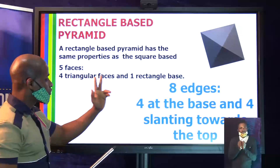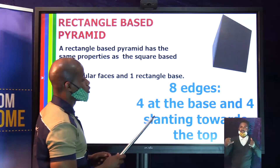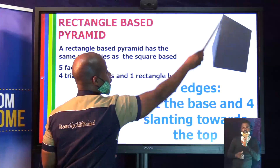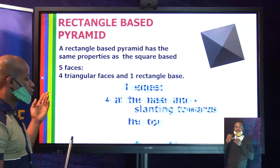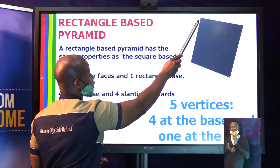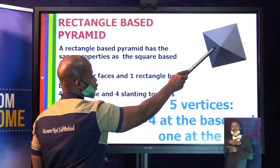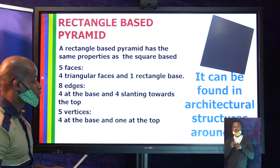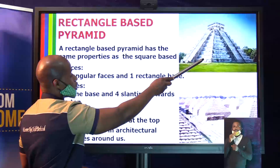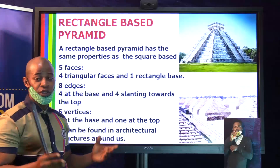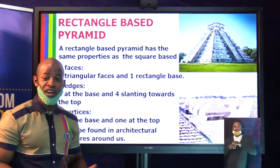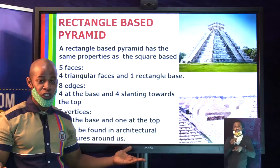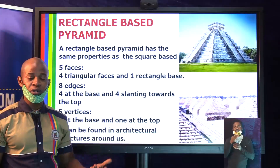It also has five vertices: four at the base and one on top. This shape appears in architectural structures around us. The Mayan temple is an ancient temple in the shape of a rectangle-based pyramid. The famous granite pyramids of Kano, where the Kano people used to pile up their granites in the form of rectangle-shaped pyramids, are another example.